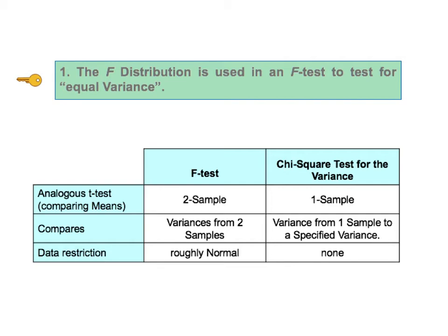There is not an F test for doing something like that. To compare the variance from one sample to a specified variance, we would use a different test statistic, chi-square, and we would use a chi-square test of the variance. There is no data restriction for this test.